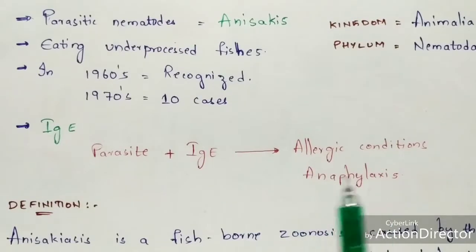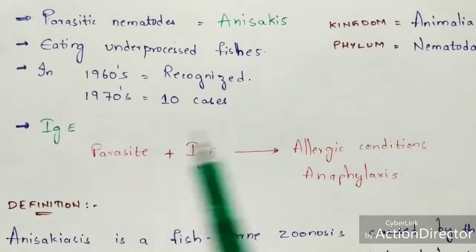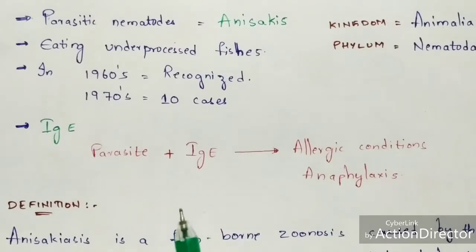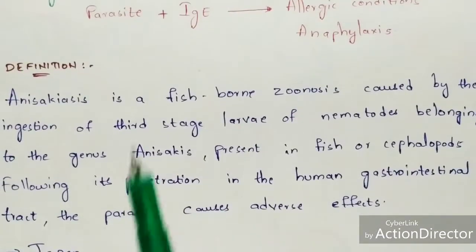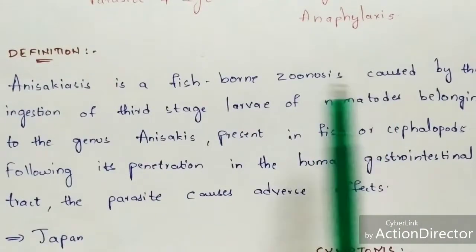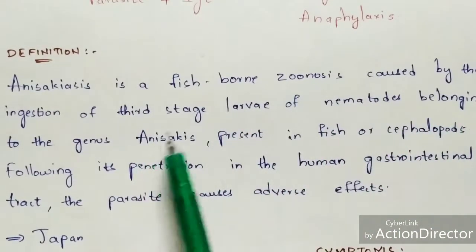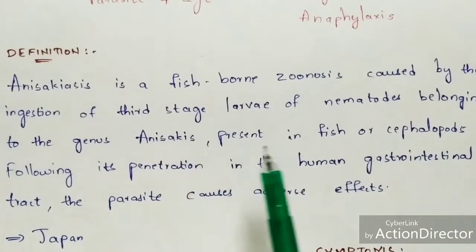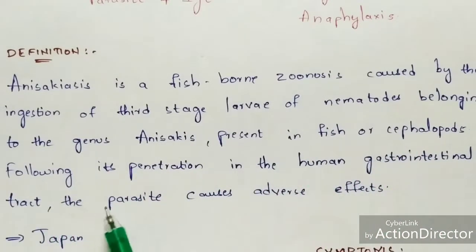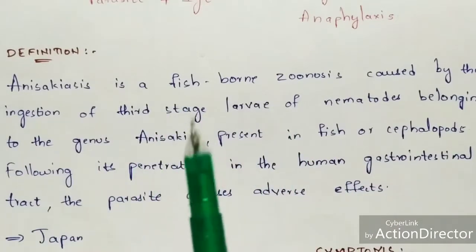The allergic conditions include anaphylaxis, rashes, and itching. So that is the introduction part you need to know about anisakiasis. Coming to the definition: anisakiasis is a fish-borne zoonosis caused by the ingestion of third-stage larvae of nematodes belonging to the genus Anisakis, present in fish or cephalopods, following its penetration in the human gastrointestinal tract, where the parasite can cause adverse effects.